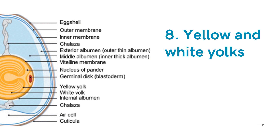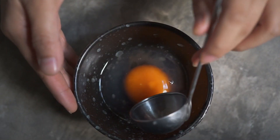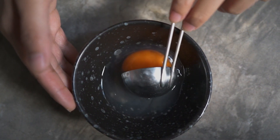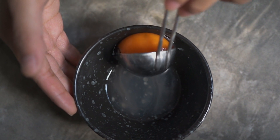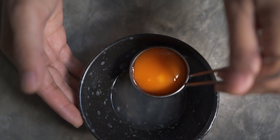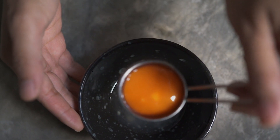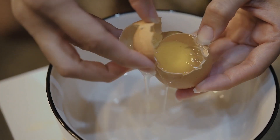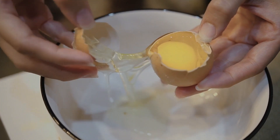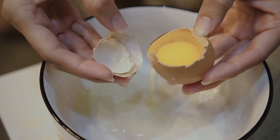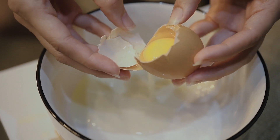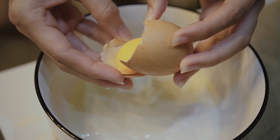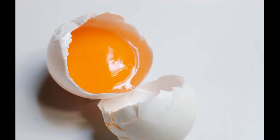The yellow yolk is a major source of vitamins, minerals, almost half of the protein, and all of the fat and cholesterol. The yolk contains less water and more protein than the white, some fat, and most of the vitamins and minerals of the egg. These include iron, vitamin A, vitamin D, phosphorus, calcium, thiamine, and riboflavin. The yolk is also a source of lecithin, an effective emulsifier.